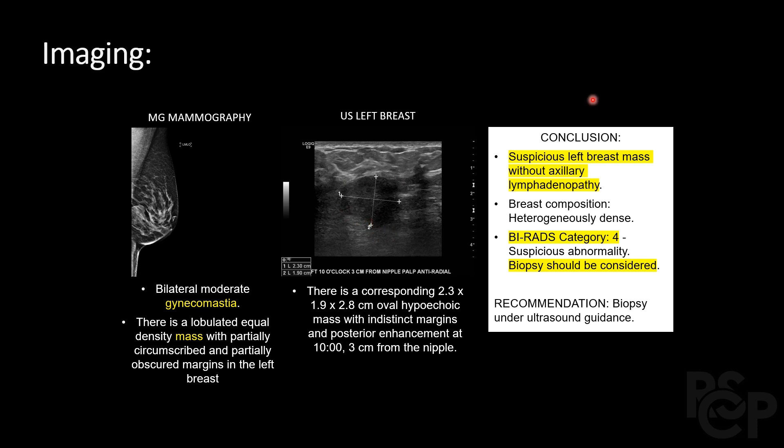So what conclusions can we draw from this? There is a suspicious left breast mass without any axillary lymphadenopathy. The breast tissue is heterogeneously dense. This is categorized as BIRADS IV, which means a suspicious abnormality, so a biopsy would be the recommendation here.